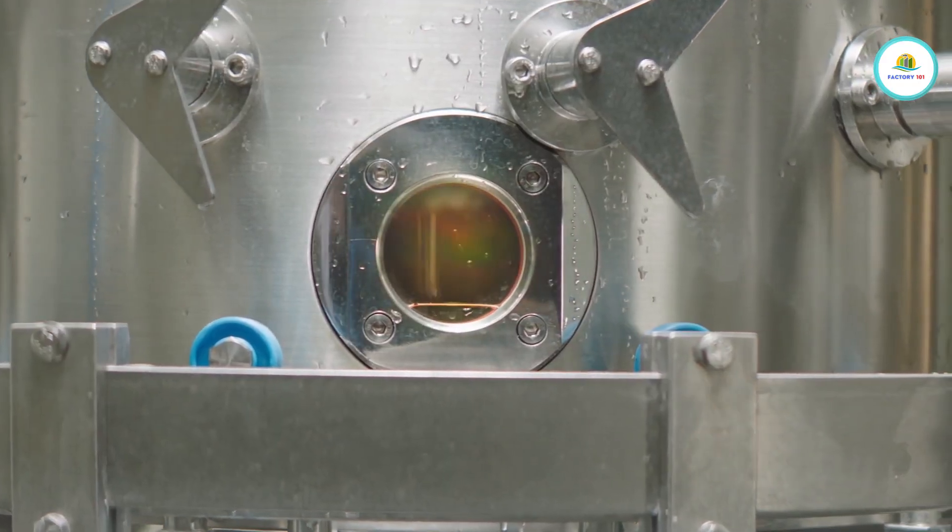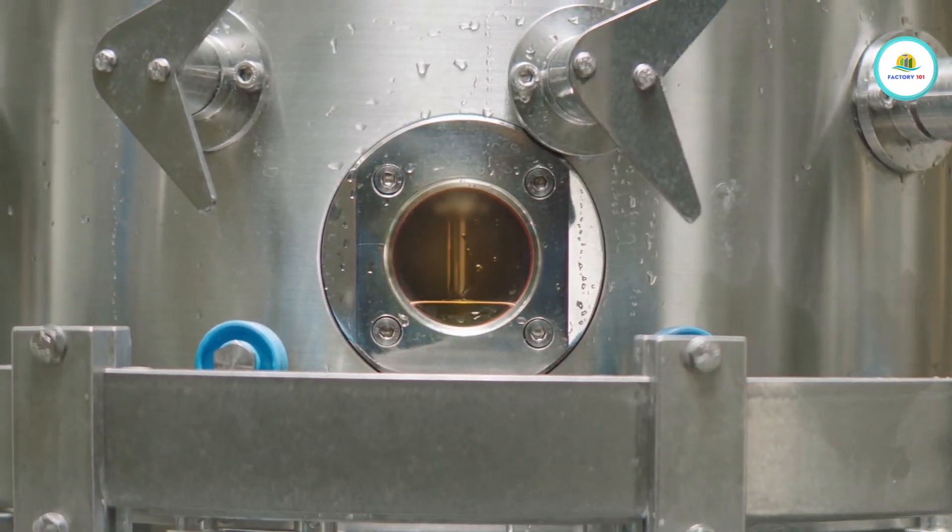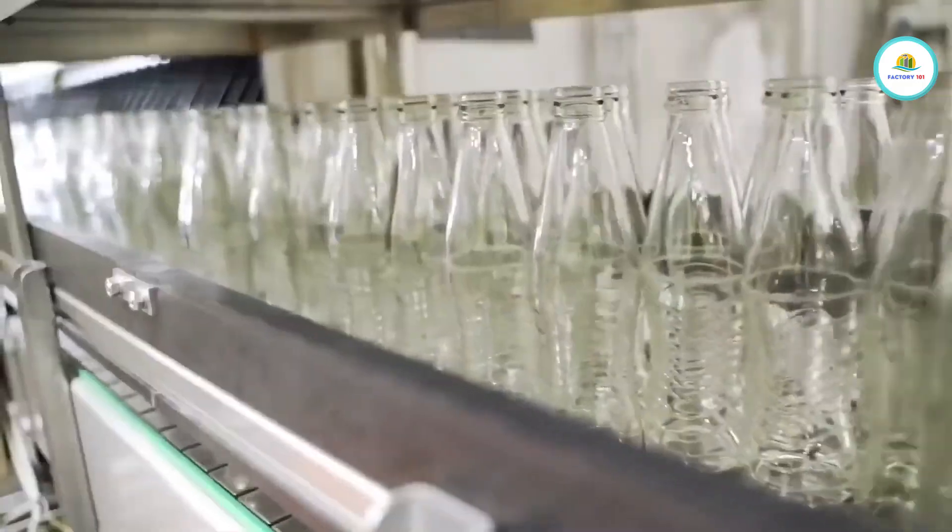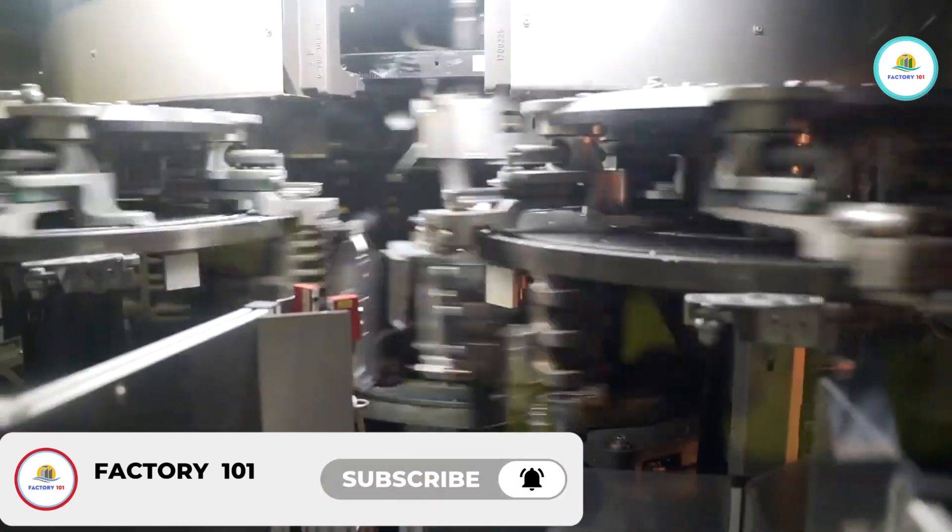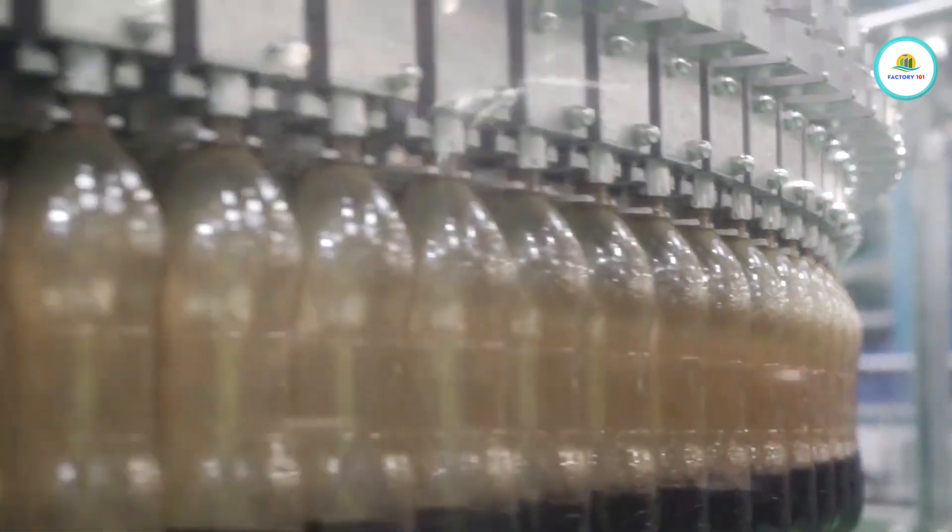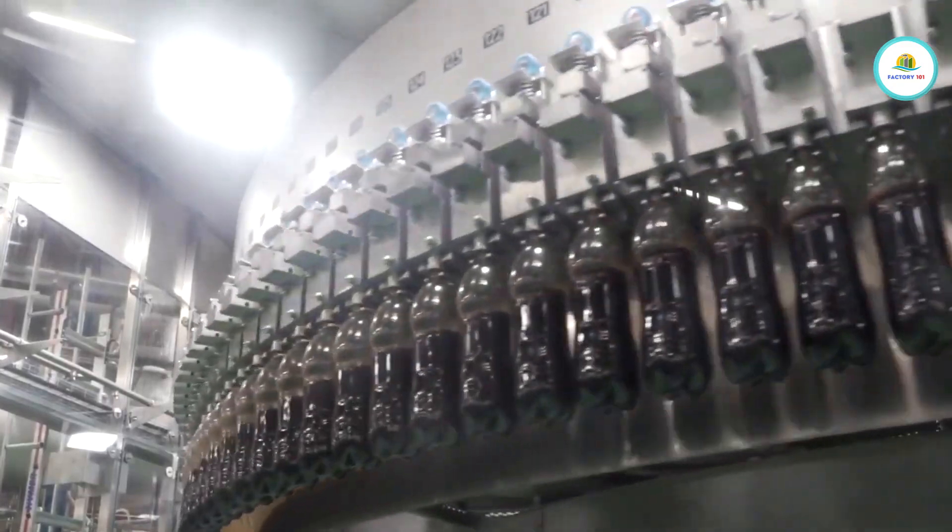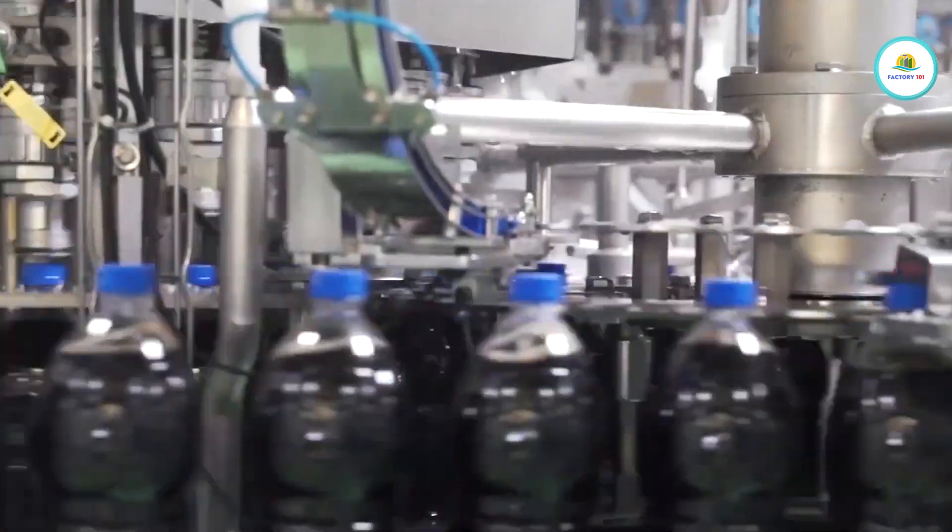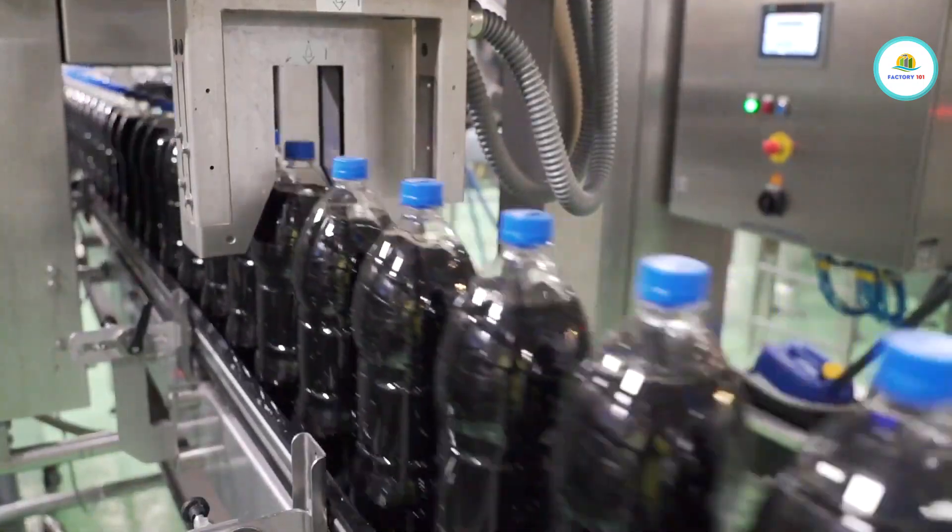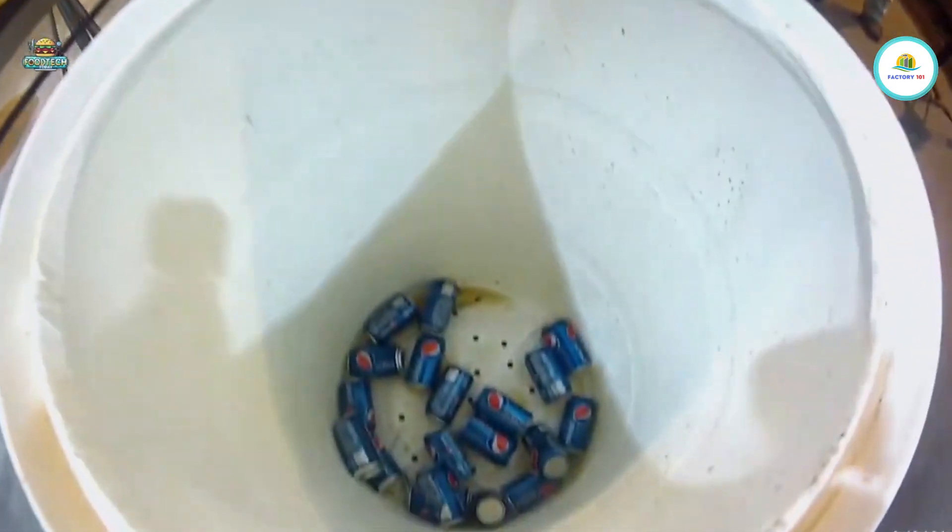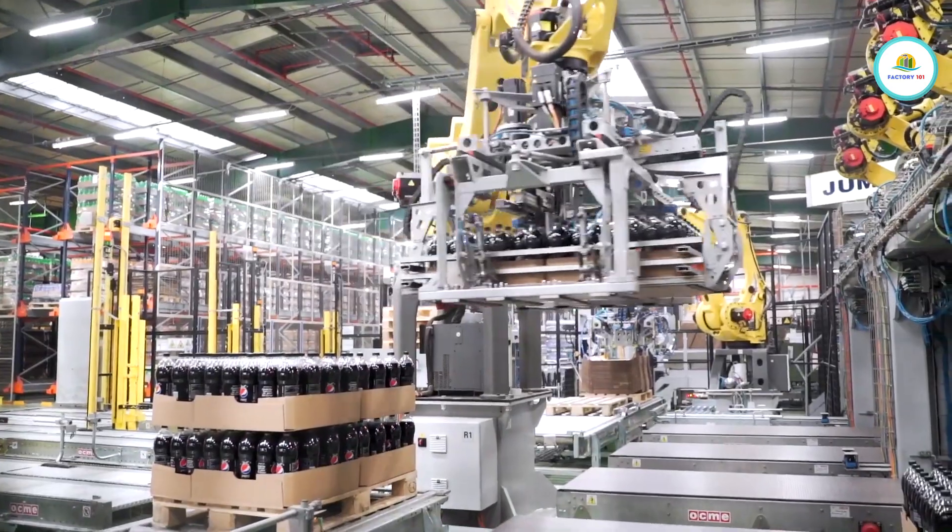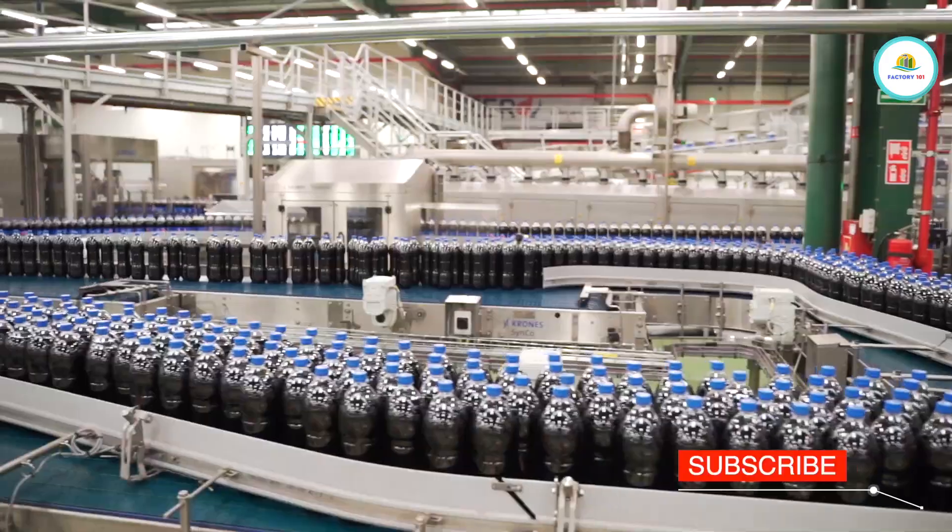Once the formula is carbonated, it flows into the filling machines. Imagine rows of bottles gliding like dancers under a synchronized ballet of robotic arms. The nozzles descend, grab the necks, and hiss. Each bottle is filled with exactly 355 milliliters of Pepsi. The precision is so tight, even a one milliliter variation can cause a quality reject. And yes, it's all contactless. No human hands touch your Pepsi until you pick it up from the shelf.